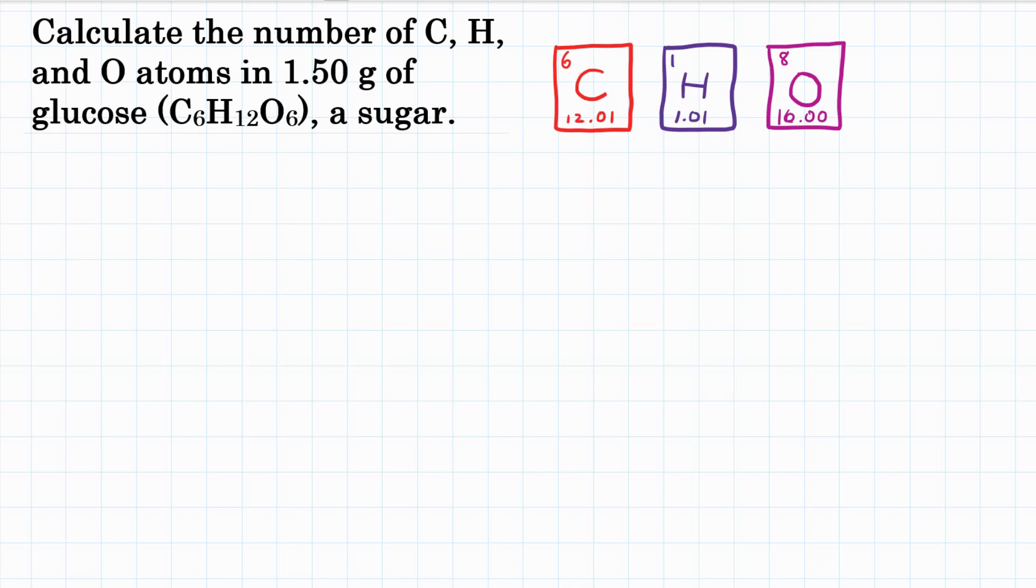We're starting with 1.50 grams of glucose, and they want the number of atoms, individual atoms, where we have both carbon, hydrogen, and oxygen. So we're going to start with 1.50 grams, and that's of glucose, C6H12O6.